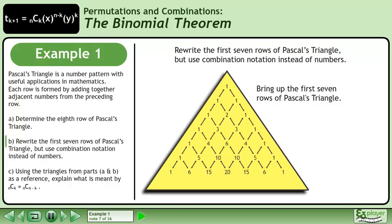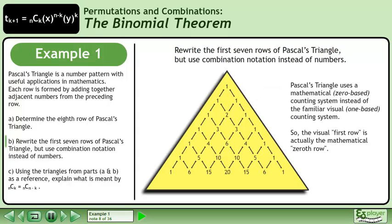Bring up the first seven rows of Pascal's Triangle. Pascal's Triangle uses a mathematical zero-based counting system instead of the familiar visual one-based counting system. So, the visual first row is actually the mathematical zeroth row.